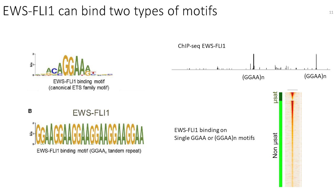The second motif is much more specific for EWS-FLI1 — no wild-type ETS family members can bind to it; only EWS-FLI1 is able to do this. These are repeated GGAA sequences forming what are called microsatellite sequences. The more GGAA repeats you have, the more EWS-FLI1 is able to bind, up to a maximum of approximately 20 GGAA repeats. To my knowledge, this is the only protein able to bind to this.